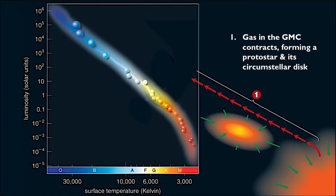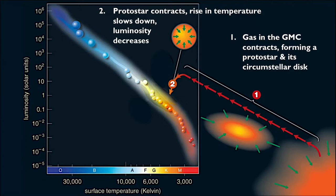As a protostar contracts, its temperature increases. With a rise in temperature comes greater speed in the movement of gas molecules, increasing the internal pressure of that protostar. Gravitational contraction slows down because of this, and that causes the rise in temperature to slow down too.